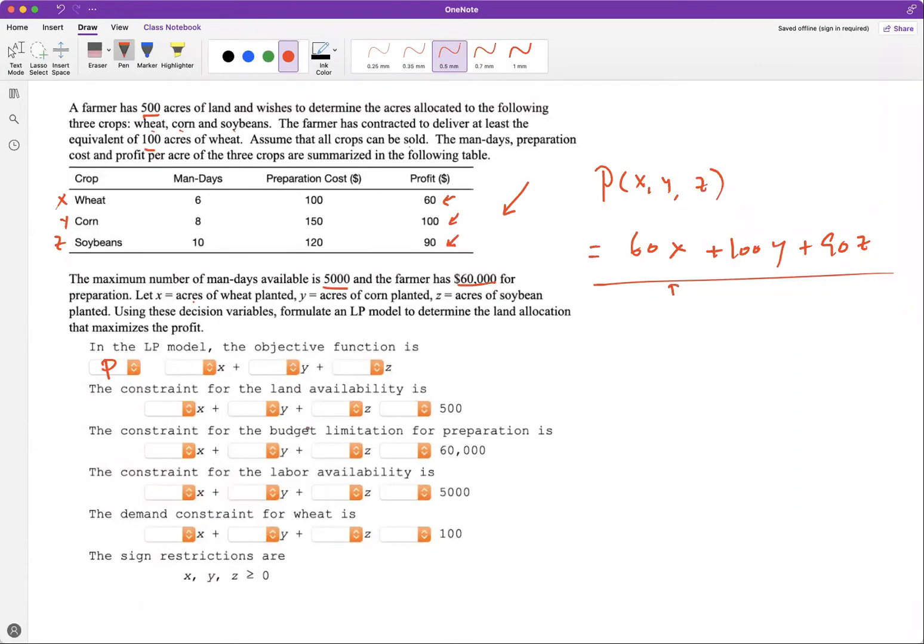The constraint for the land availability is that X plus Y plus Z must equal 500. So you have one, one, one, and this must be equal to 500.